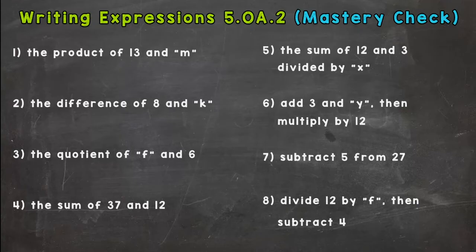Welcome back. I'm assuming you have those eight expressions written out, so let's go over our answers here. Number one, the product of 13 and M. So our keyword there, product, and we should have 13M or any of the other ways you can show multiplication.